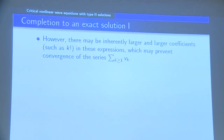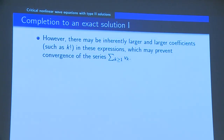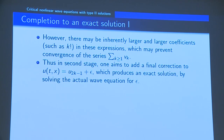To get my approximate solution, I take the sum of all these corrections and add them to u_0. The series doesn't converge because you get larger and larger coefficients which grow. So at some point you have to stop, otherwise you get a formal divergence.